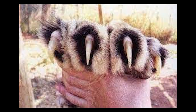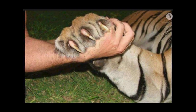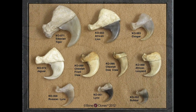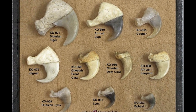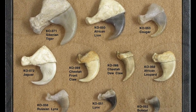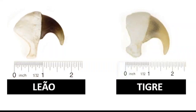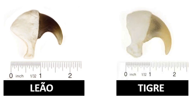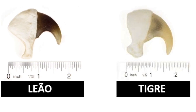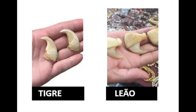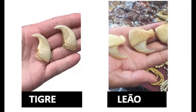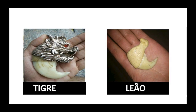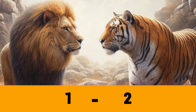Agora, garras. Ambos apresentam garras grandes, retráteis e afiadas. Porém, estudos de réplicas sugerem que as garras de tigres são maiores que as garras de leões. Uma amostra mostrou que as garras de tigres eram significativamente maiores, embora essa diferença diminua com a aproximação do porte desses animais. Mas normalmente, as garras maiores são do tigre. Nesse item, ponto para o tigre.